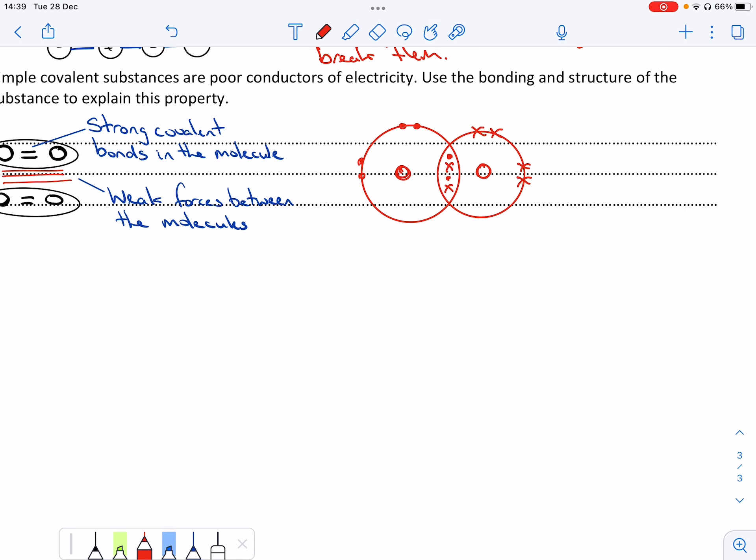So my answer needs to reflect that. So they're poor conductors. Why? Because the electrons are used in covalent bonds and are not free to move.